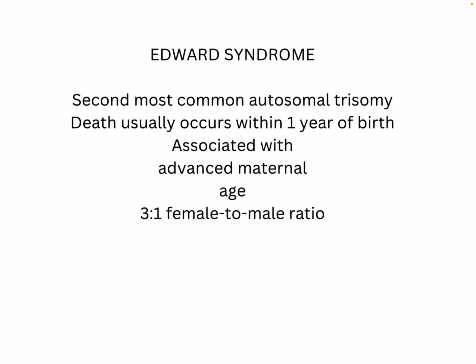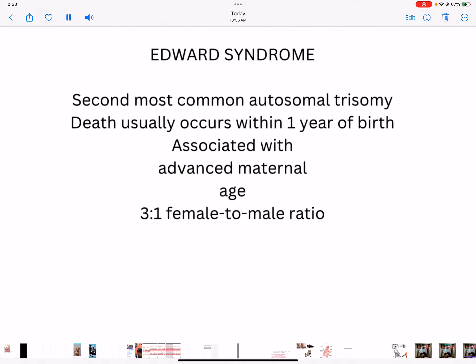Edward Syndrome is associated with advanced maternal age — similar to Down Syndrome, where there is an increased chance of the baby being affected if the mother's age is greater than 35 years. Edward Syndrome is also more common in females than males, with a female to male ratio of 3:1.